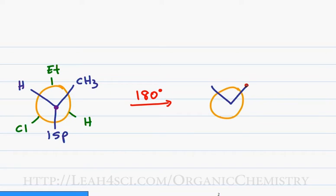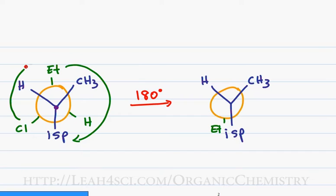I'll start out by drawing the ring and keeping the front carbon as it is. When I rotate the rear carbon 180 degrees, the ethyl comes around to sit directly behind the isopropyl group, the chlorine moves 180 to sit behind methyl, and the hydrogen turns 180 to sit directly behind the other hydrogen.